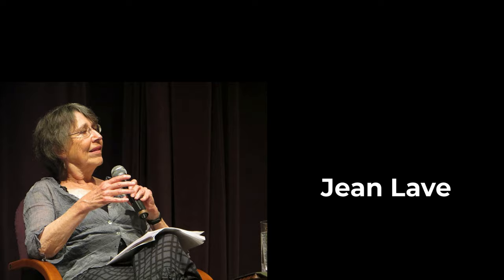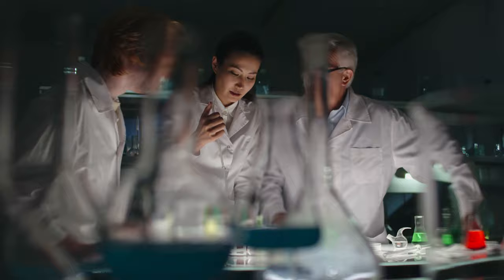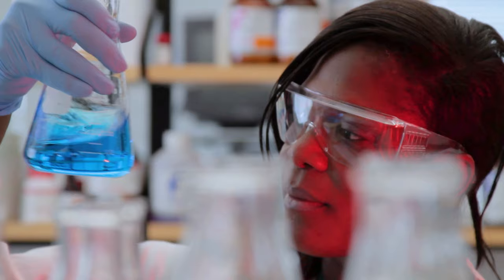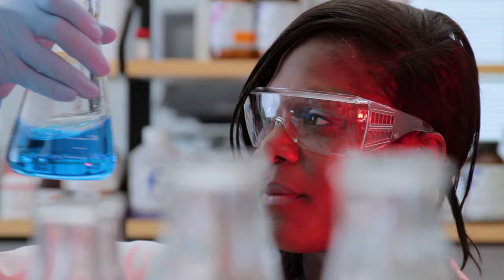Situated learning is a theory proposed by social anthropologist Jean Lave at UC Berkeley. The basic idea is that learning is unintentional and situated within authentic activity, context and culture. Some key terms to learn include cognitive apprenticeship and how legitimate peripheral participation eventually leads to being a member of what is known as a community of practice.